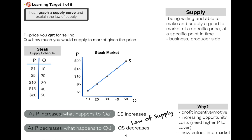Also, there are increasing opportunity costs — think back to the PPF. The more you make, the more time goes into it and there's other stuff you can't do, so you need a higher price to cover those costs. And then also, at a higher price, it could incentivize people who weren't making steak before to suddenly enter the steak market.